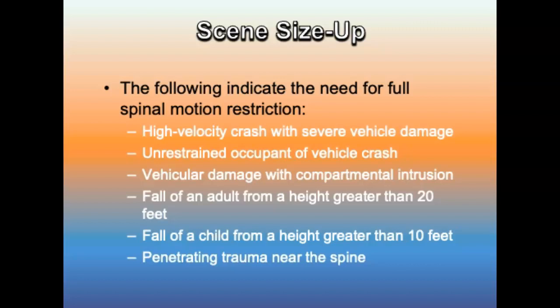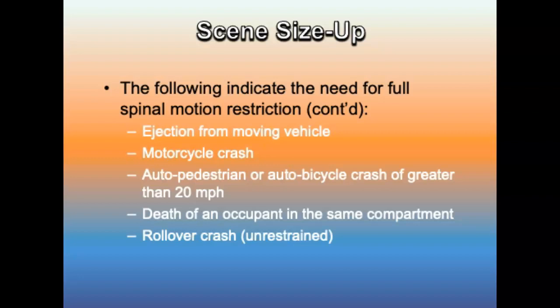Additional criteria include ejection from an MVA, motorcycle crash greater than 20 miles per hour, adult pedestrian or bicycle crash greater than 20 miles per hour, death of an occupant in the same passenger compartment, and a restrained rollover crash. Ensure manual stabilization of the cervical spine in a neutral inline position, determine level of consciousness, conduct your primary survey, and apply a cervical collar if your findings require it. Assess ABCs and pulse, motor, and sensory functions.